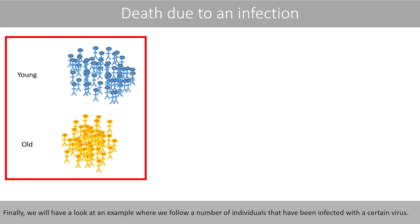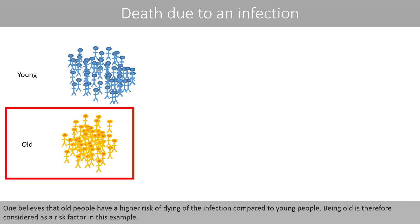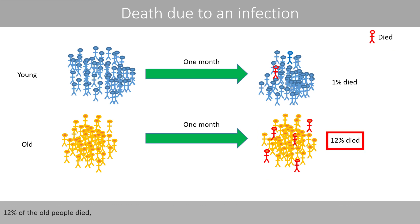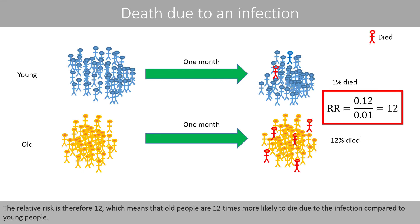Finally, we will have a look at a next example where we follow a number of individuals that have been infected with a certain virus. Being old is considered a risk factor in this example. The individuals were followed for one month after they had been infected. The proportion of deaths due to the infection was then calculated. 12% of the old people died, whereas only 1% of the young people died. The relative risk is therefore 12, which means that old people are 12 times more likely to die due to the infection compared to young people.